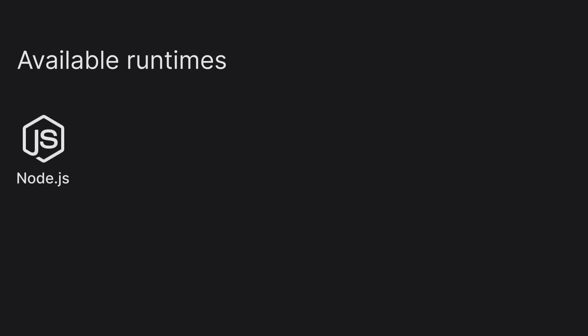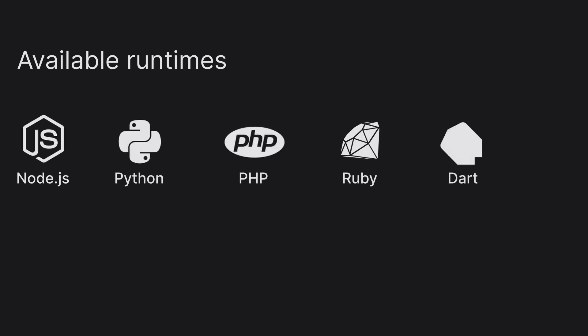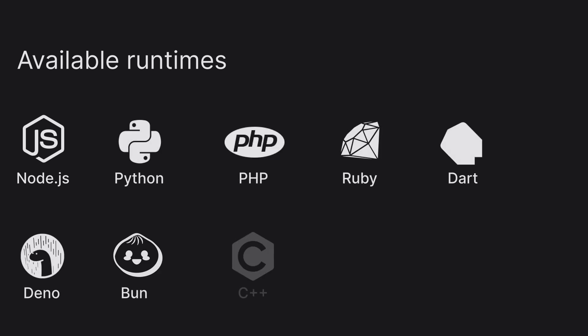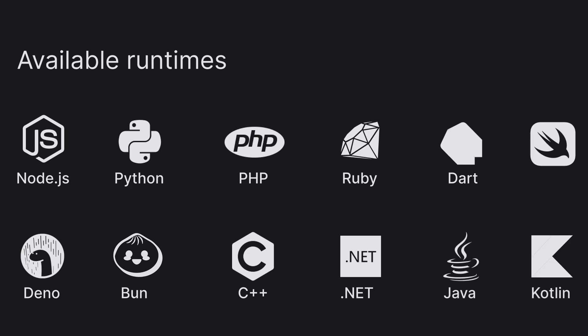When it comes to how you write your code, this is where Appwrite gives you a ton of flexibility by offering many different runtimes to choose from, including Node.js, Python, PHP, Ruby, Dart, Deno, even Bun, and more. That's a huge plus for Appwrite — giving you the power to choose how you write your own code.